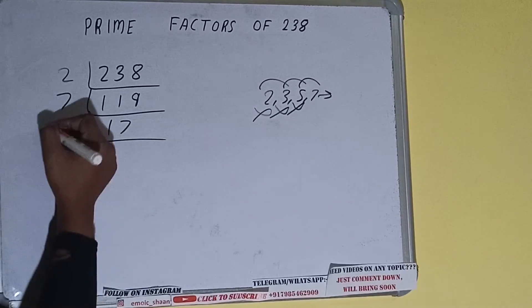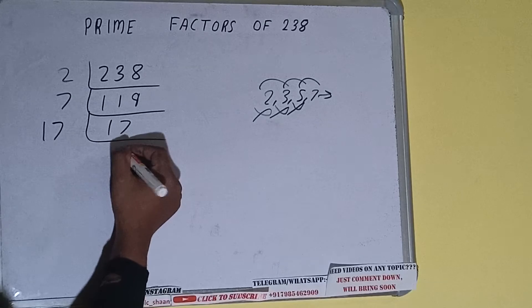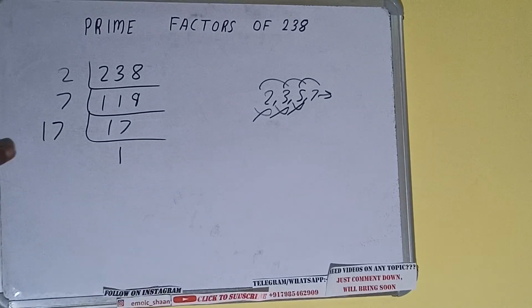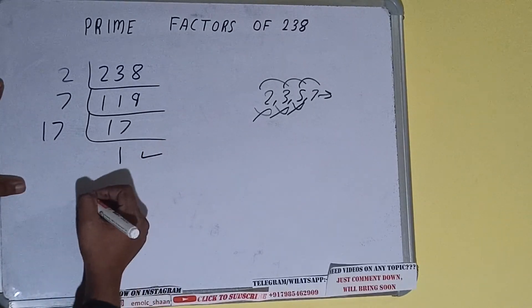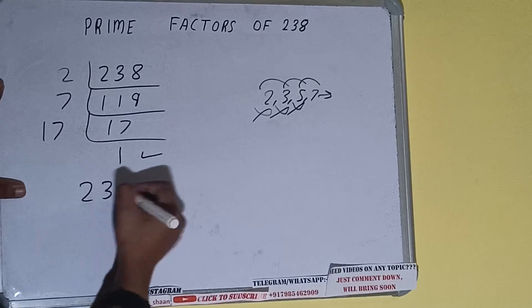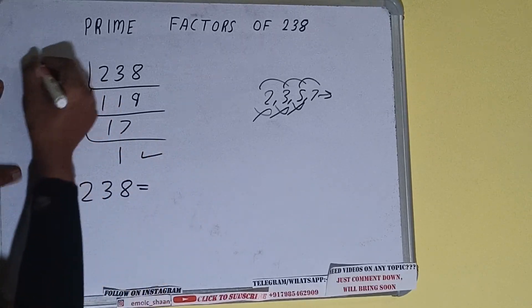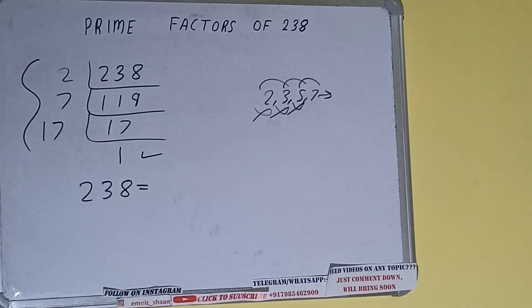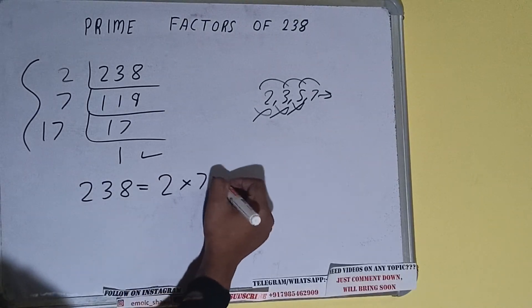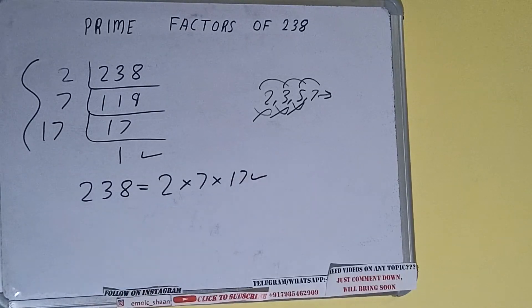17 is only divisible by itself and 1. When we divide by 17, we get 1. Once we get 1, we need to stop and write the final answer. The prime factorization of 238 equals 2 times 7 times 17.